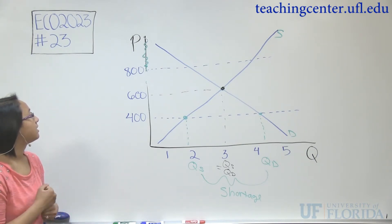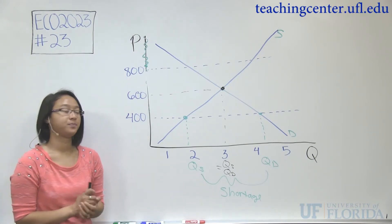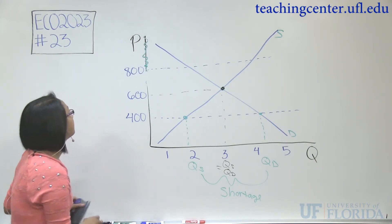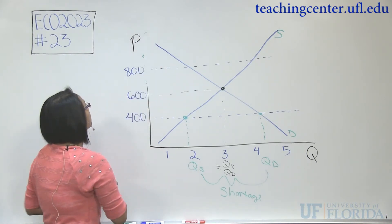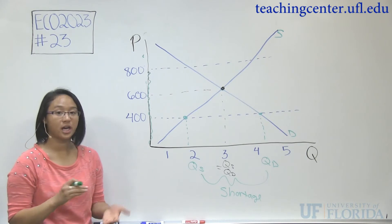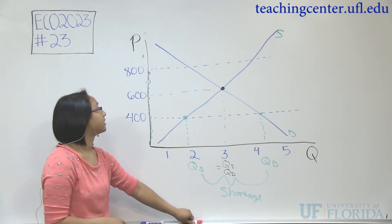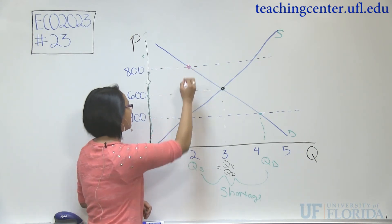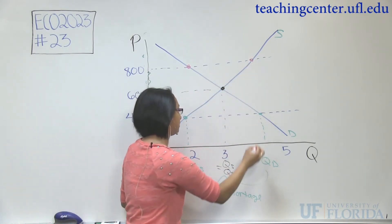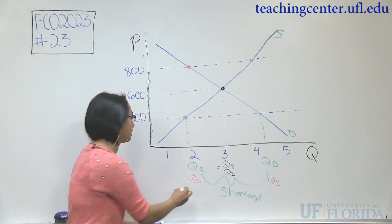Now, say instead that this was not an $800 price ceiling, but an $800 price floor. With a price floor, you can't go below it, which means we can't produce at equilibrium. All prices below $800 are restricted. With the price set at $800, our quantity supplied and quantity demanded will be different. Where the price intersects the demand curve, we have quantity demanded of 2,000. Where the price intersects the supply curve, we have quantity supplied of 4,000. Because quantity supplied is greater than quantity demanded, we have a surplus.